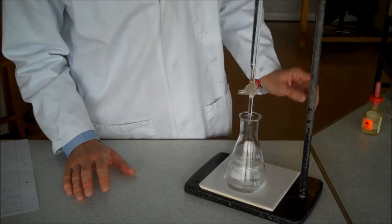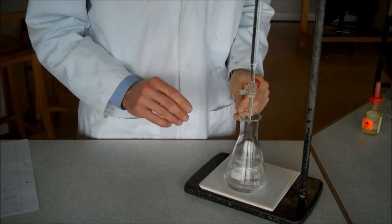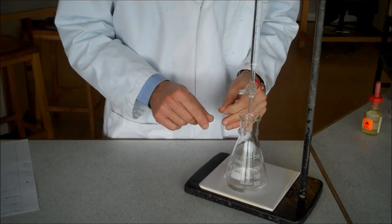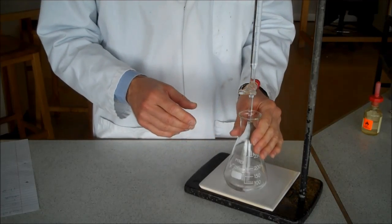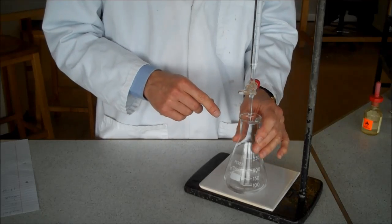Now, the amount of acid I've added is about 11.9 centimetres cubed. That's my rough result. I'm not actually going to use that in my calculations, but 11.9 gives me a rough idea of how much acid I need to add to exactly neutralise my alkali.